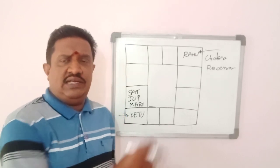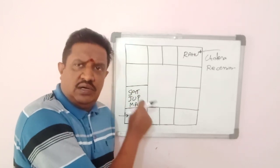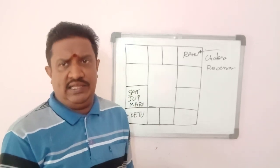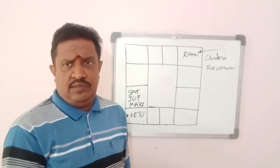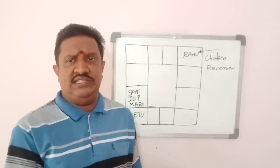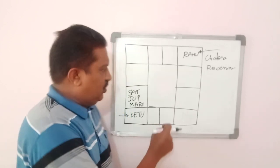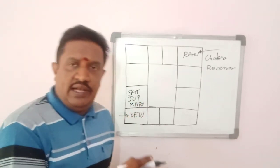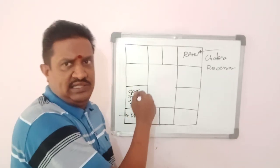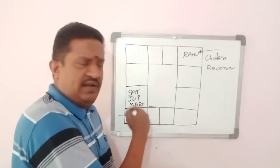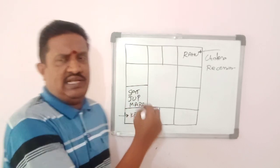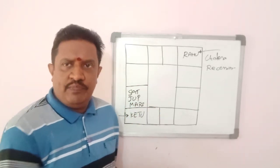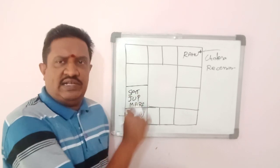Uttarashara Nakshatra is the Nakshatra of the Sun, and Sun is the Karaka for health — 'Aarogyam Bhaskara Dicche,' as the Sanskrit dictum goes. Whenever Saturn transits Uttarashara Nakshatra, the health of people across the whole globe will be a cause of concern.